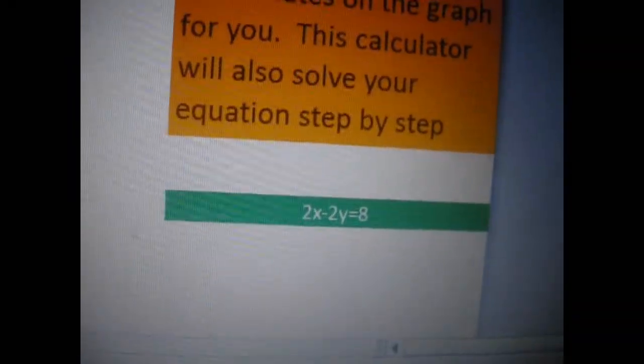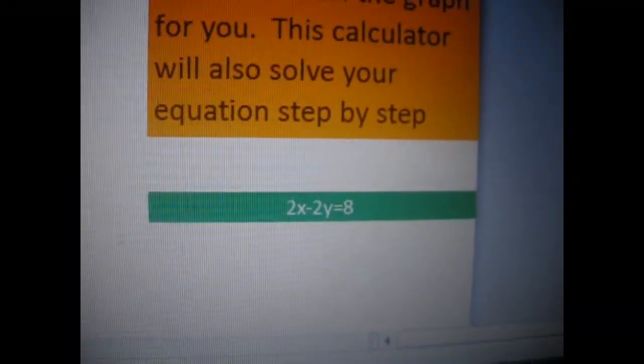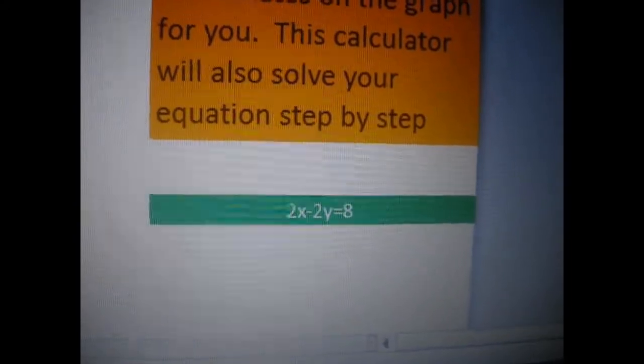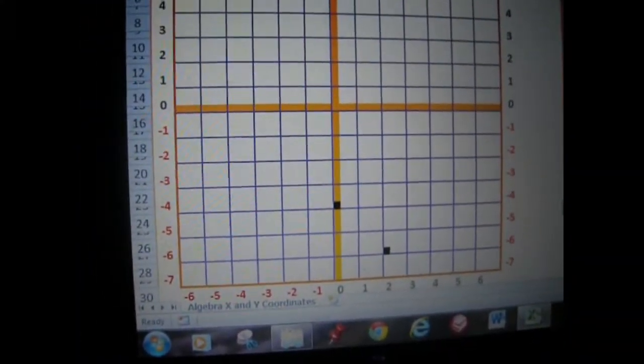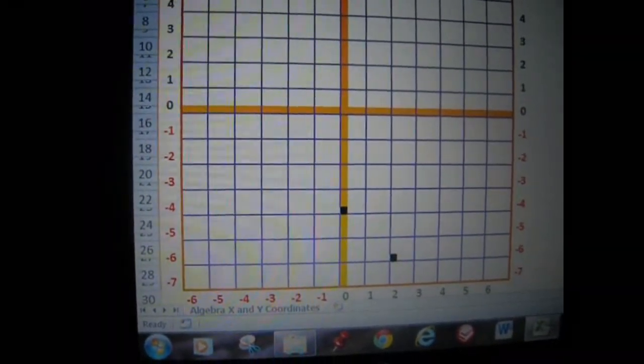The equation should not, none of the numbers should lead to more than six, because as you can see, this graph stops at six. So you need to make certain that the plots don't go off the graph.